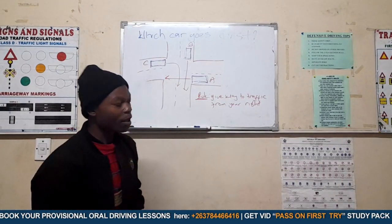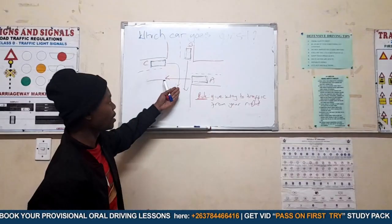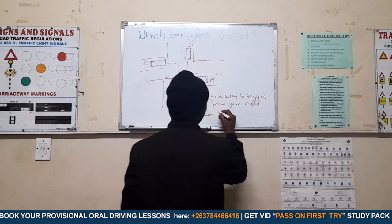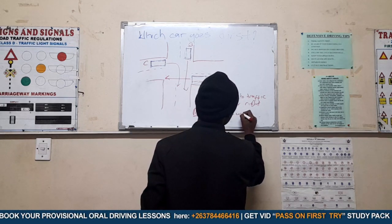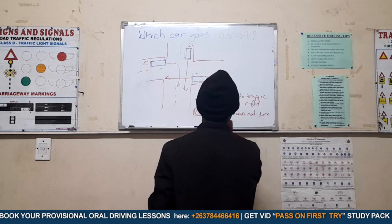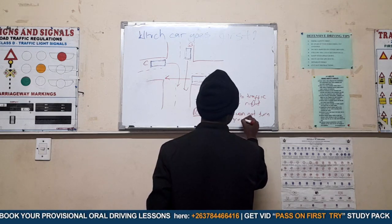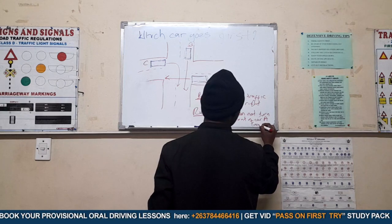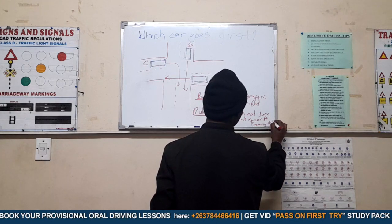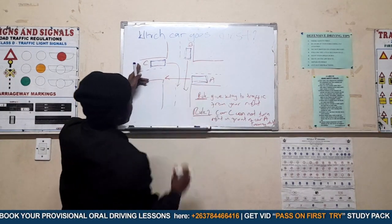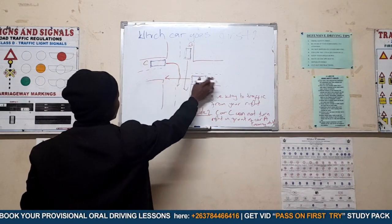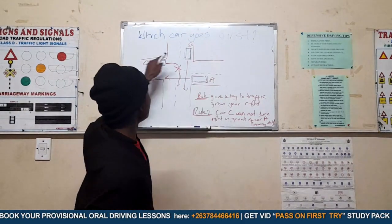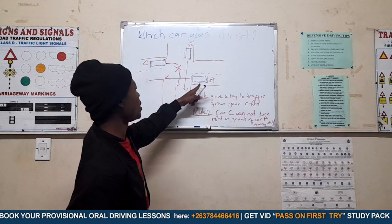Now we have arrived at car C. Car C wants to turn right, but there is an oncoming vehicle. That brings in another rule. Car A is the oncoming vehicle approaching car C, so car C definitely cannot turn right. This is the second rule — you cannot turn right in front of an oncoming vehicle.